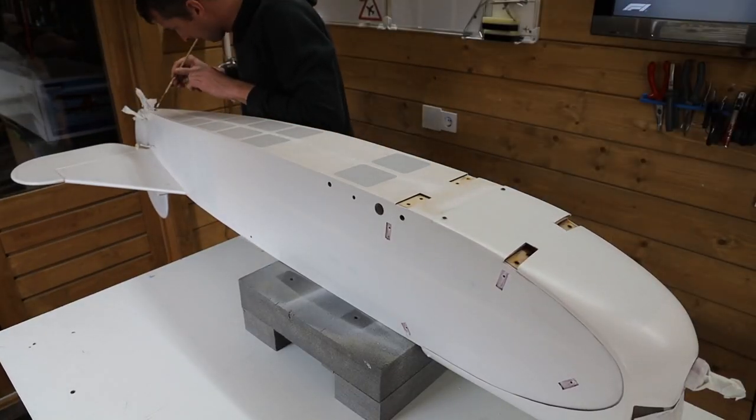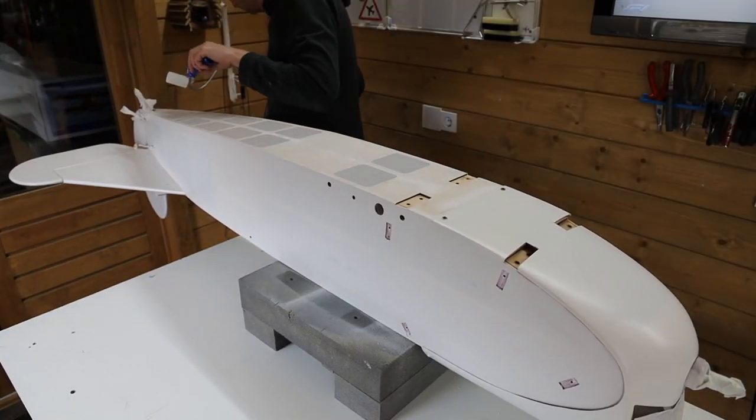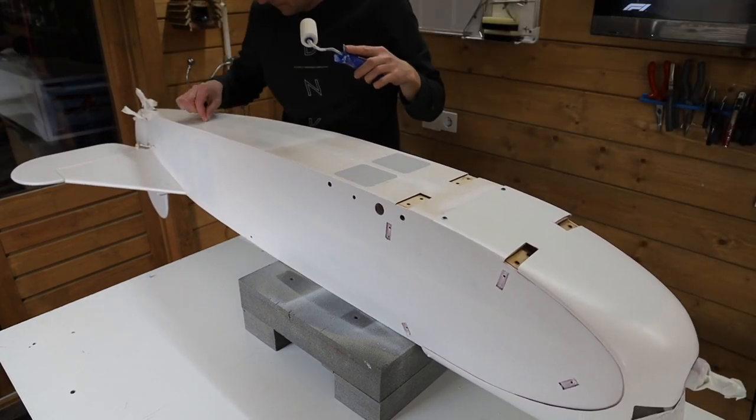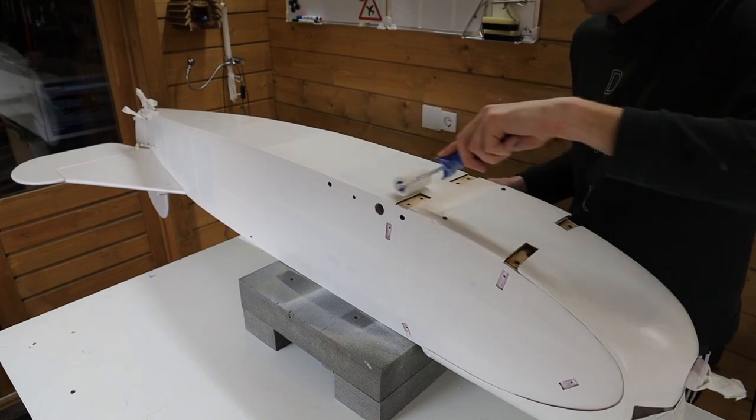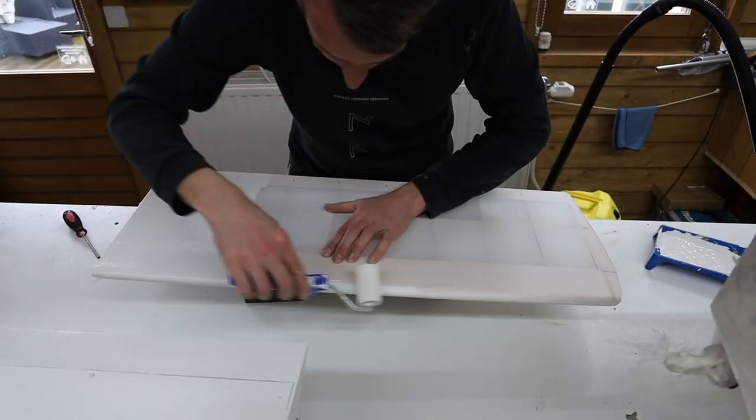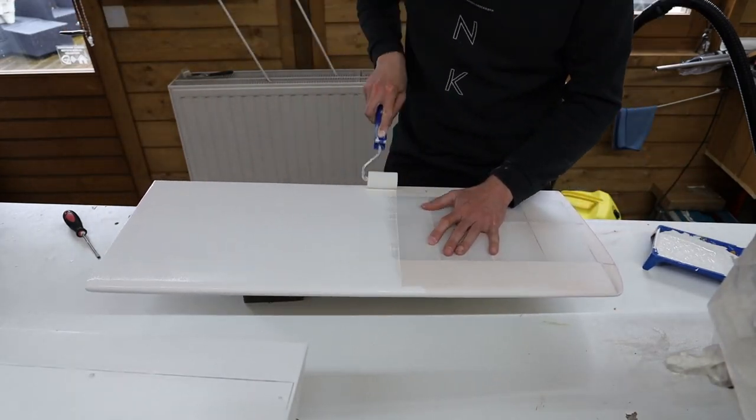And then it's time for the paint job. I use brushes and a paint roller to paint the entire plane. I used a matte coat based on water. I made the paint very thin so that the structure of the Oracover is not lost.